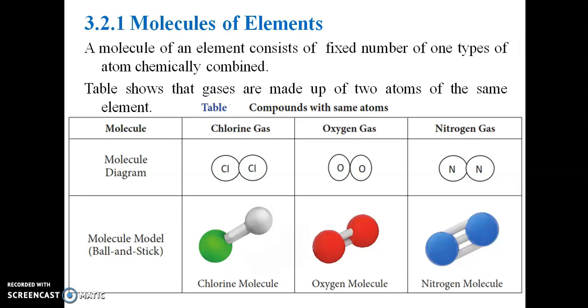Chlorine gas is Cl-Cl, oxygen gas, nitrogen gas — different elements made up of two atoms.